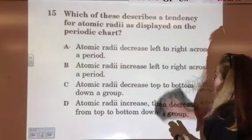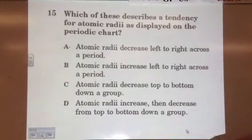Last one. Periodic trends. Which of these describes the tendency for atomic radii displayed across the periodic chart? As we go left to right, what happens to the size of the atom? Decreases. So it's going to be A.